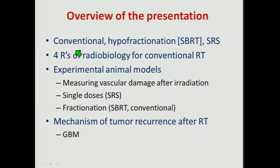I'm going to define from my radiobiological perspective conventional, hypofractionation, or SRS treatments. I'm going to refresh your memory about the four R's of radiation biology. And then present some experimental animal model data looking at vascular damage after predominantly single doses, and also some fractionated treatments. These dose levels were chosen because they're clinically relevant in the animal model, but also pragmatically it's very difficult to irradiate animals with repeated large doses and maintain good measurements of hypoxia and vascular flow. And finally, I'll finish up looking at the mechanisms of tumor recurrence, and how this is affected by hypoxia and how this may be influenced after high-dose fractions.